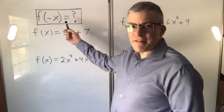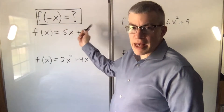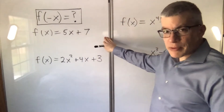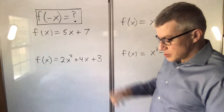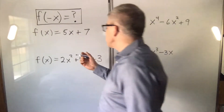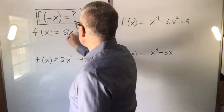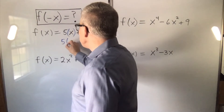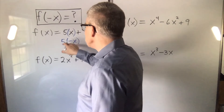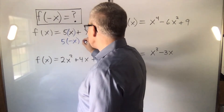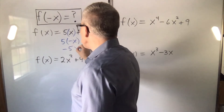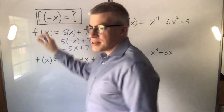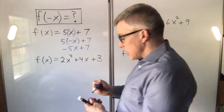How do you find f of negative x? You start with whatever formula you have for f of x. Every place there's an x, put parentheses around the x, and then just replace that parentheses x with parentheses negative x, and simplify. This one becomes negative 5x plus 7. That is f of negative x.